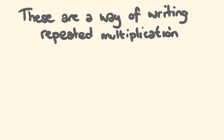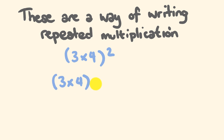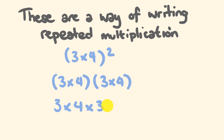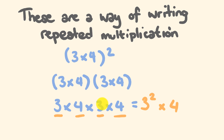One last example — what about 3 times 4, all squared? We have 3 times 4, multiplied by 3 times 4, which gives us 3 times 4 times 3 times 4. We can write this more simply: the base 3 appears twice, so that's 3 squared, and the base 4 also appears twice, so that's 4 squared. So another way of writing (3 times 4) squared is 3 squared times 4 squared.